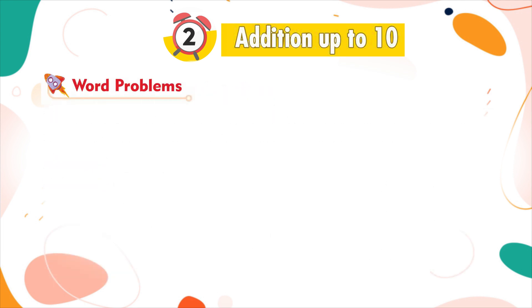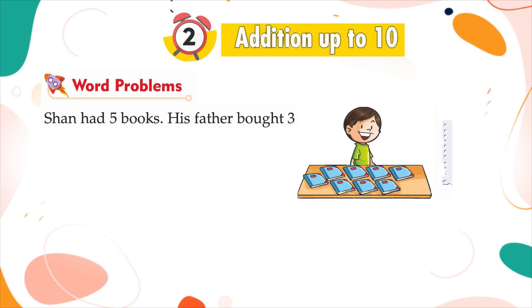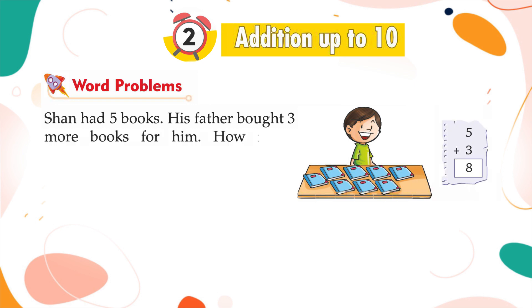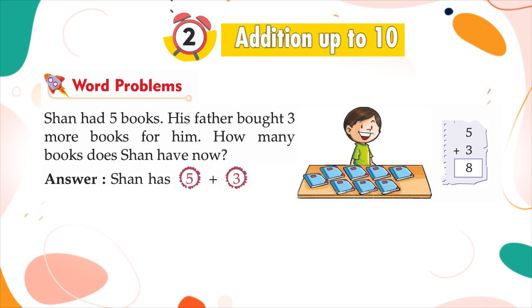Word problems: Shan had 5 books. His father bought 3 more books for him. How many books does Shan have now? Answer: Shan has 5 plus 3 is equal to 8 books now.